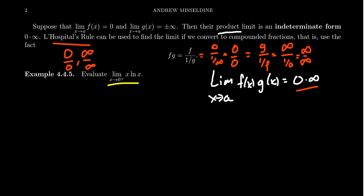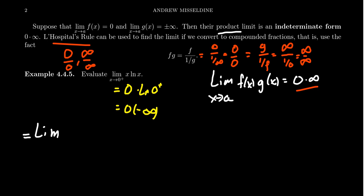Consider, for example, the limit as x approaches zero from the right of x times the natural log of x. If we plug in x equals zero, we get zero times the natural log of zero from the right. The direction matters here because the natural log's domain requires approaching from the right. In this situation, we get zero times negative infinity. This is an indeterminate form, and we're going to use L'Hôpital's rule. To apply it, we first have to convert this product indeterminate form into a quotient indeterminate form, recognizing that we'll need to take the derivative of the numerator and denominator.